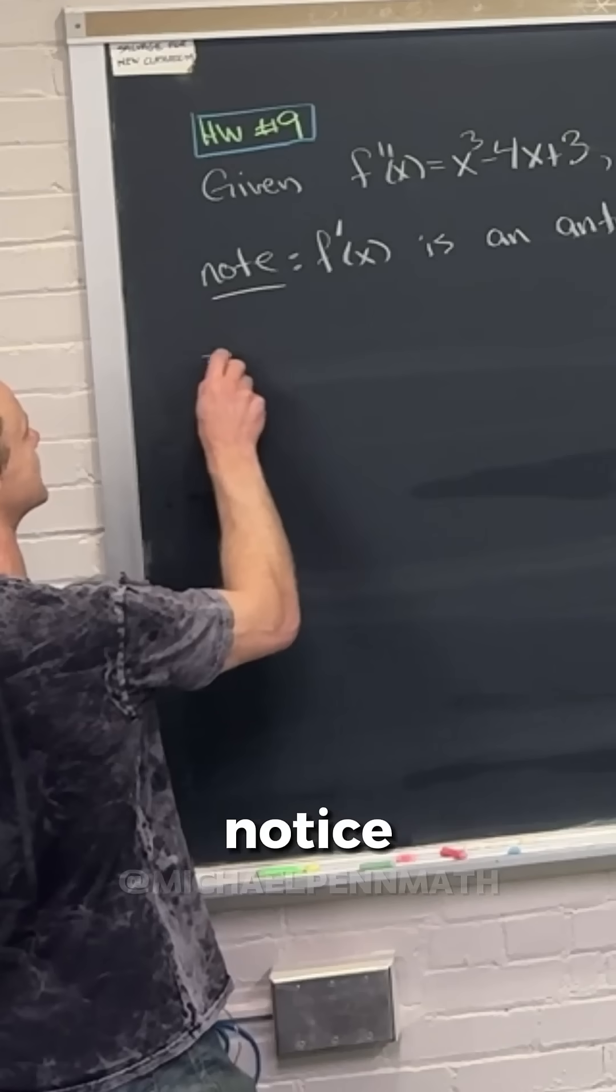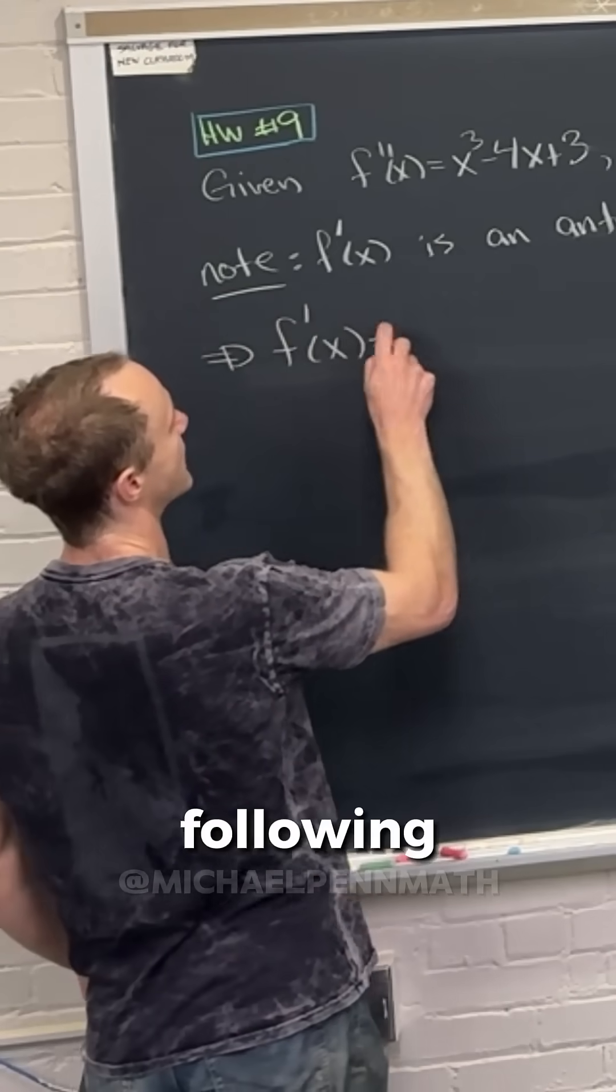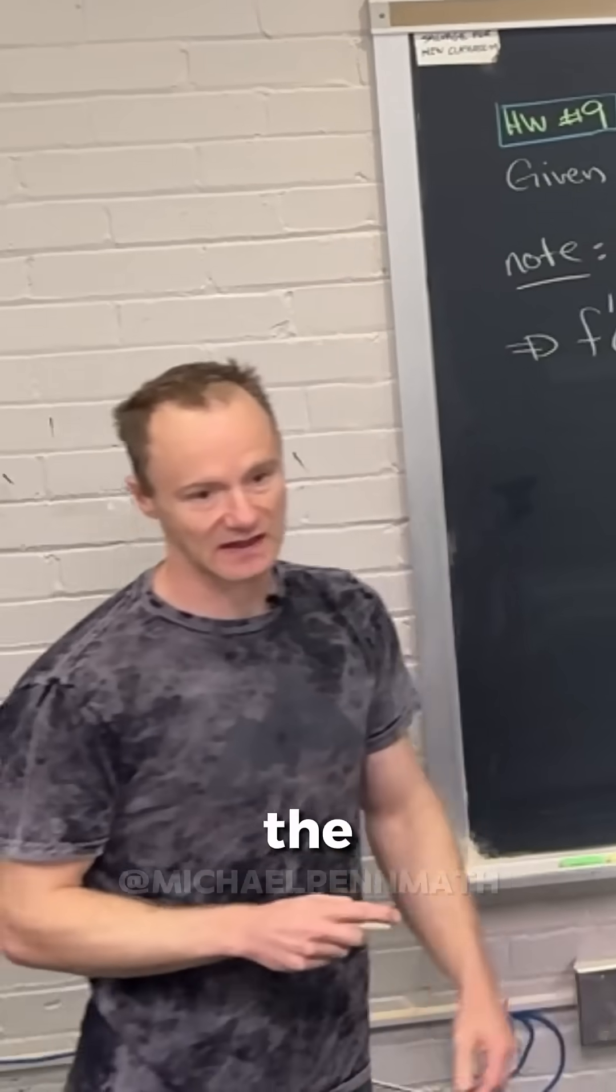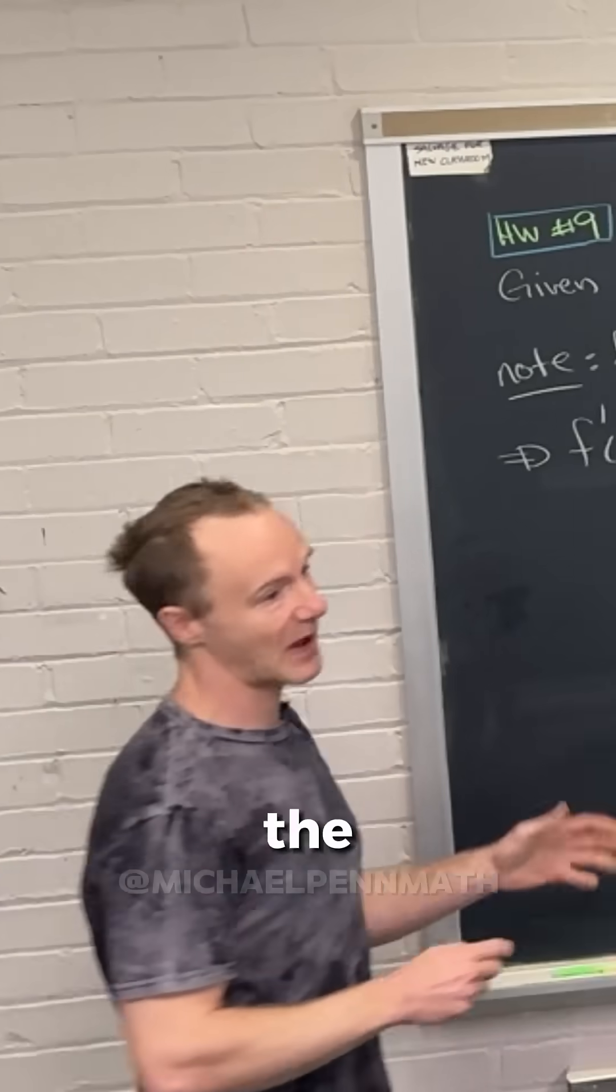Let's notice that we know f prime has the following form, essentially just by taking the antiderivative of this right hand side. So we can apply the power rule.